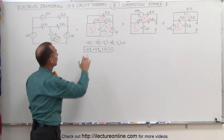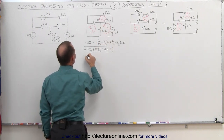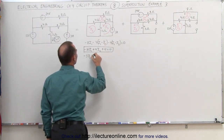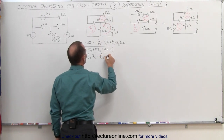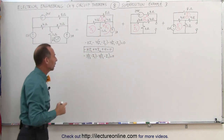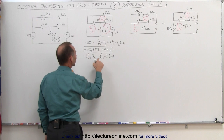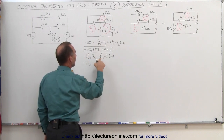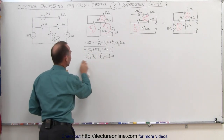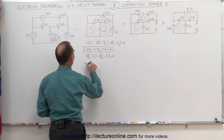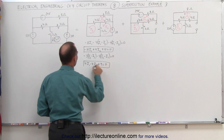Now let's go for the second mesh. Starting from this point, we have a drop across the three-ohm resistor — minus 3I2 — but I have to subtract I3 from that, minus I3. Then going around here, we have minus 4 times I2, but I have to subtract I1 from it, and that adds up to zero. I3 is three amps, and minus times a minus makes that a plus. We end up with minus 7I2 plus 4I1, and 3 times 3 is 9, so plus 9 equals zero. There's our second equation.